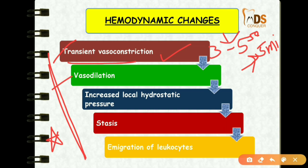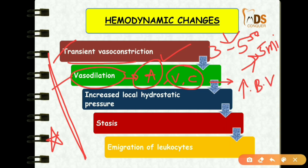After vasoconstriction, there will be persistent progressive vasodilation, which mostly occurs in arterioles, but can also occur to a lesser extent in venules and capillaries. Because of this vasodilation, there is increased blood volume, which causes redness and warmth at the site of inflammation — relating to the cardinal signs of inflammation: redness, pain, tumor, color, and so on.